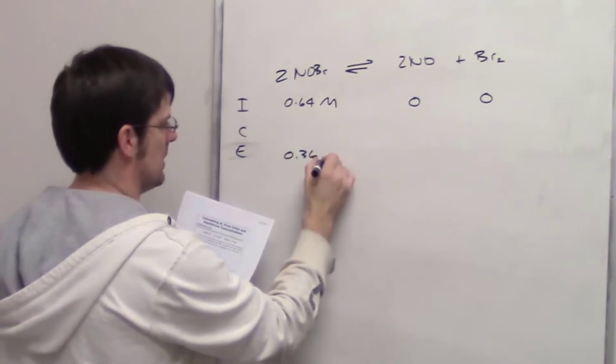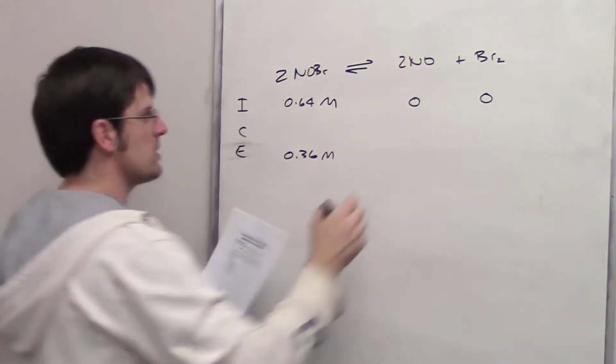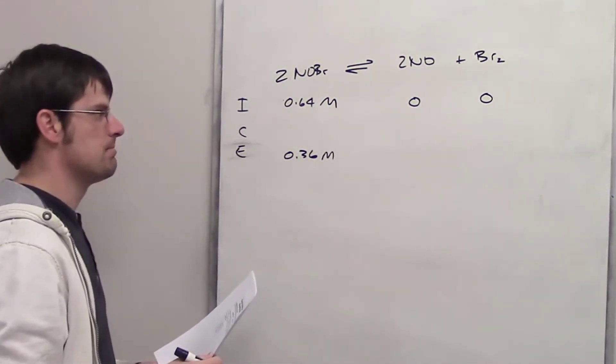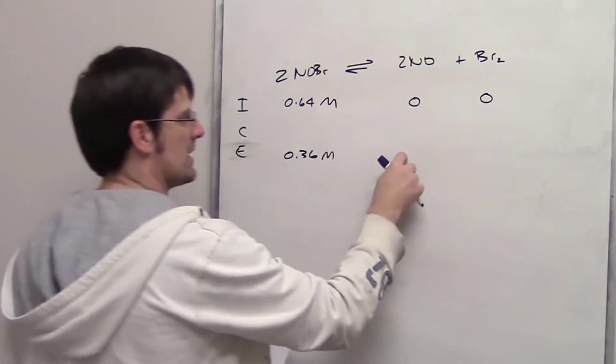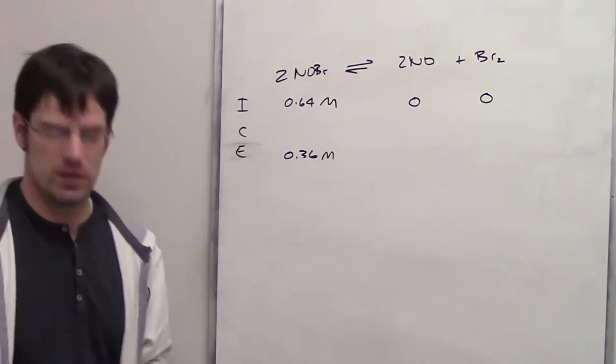Since it's in a 1-liter flask, that's 0.36 molar. The question asks how many moles of NO and Br2 are in the flask at equilibrium. I need to fill in these two blanks.